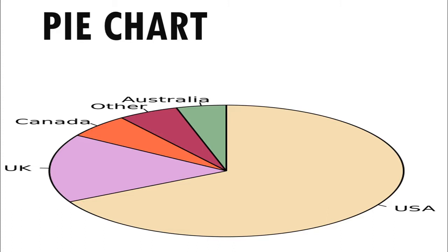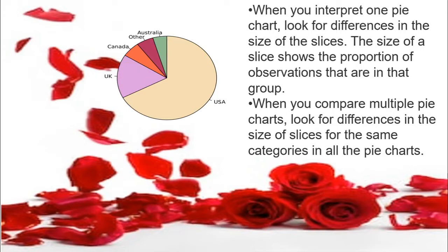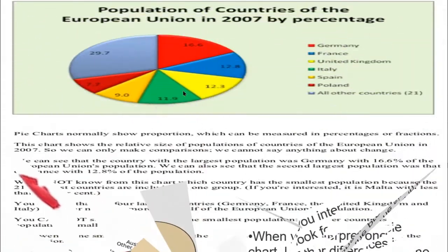To interpret a pie chart that you get in your board exam, SSC exam, or HSC exam, you have to compare them in groups. When you interpret one pie chart, look for differences in the size of the slices. The size of a slice shows the proportion of observations that are in that group. When you compare multiple pie charts, look for differences in the size of slices for the same categories in all the pie charts.